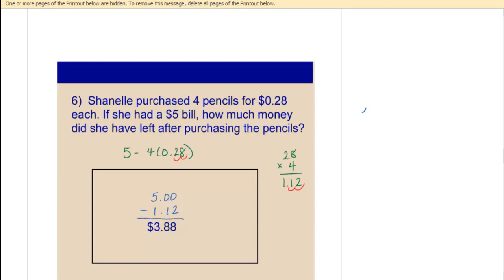In number six, we're asked to find how much money Chanel has left after purchasing some pencils. So what do you do when you are being asked how much money someone has left? That's subtraction, right? But this one's a little bit trickier because we have four items that cost the same amount each.